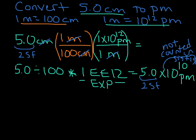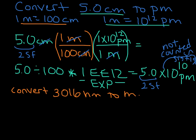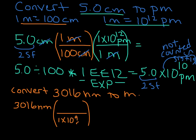For the last example, we're going to go back to nanometers and convert 3,016 nanometers to meters, writing our answer in scientific notation. Let's write down what we're starting with: 3,016 nanometers. We're going to use our nanometers-to-meters conversion — you should memorize these. We'll put 10 to the 9 nanometers on the bottom, because we need to cancel out nanometers to go to meters, since there are 10 to the 9 nanometers in 1 meter.